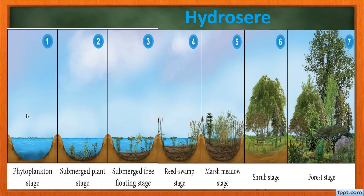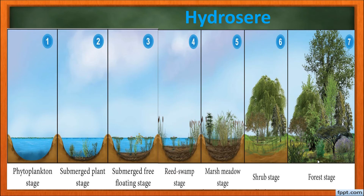To summarize the seven stages of Hydrosere: Stage 1 — Phytoplankton stage; Stage 2 — Submerged plant stage; Stage 3 — Submerged free-floating stage; Stage 4 — Reed Swamp stage, where water level begins to decrease; Stage 5 — Marsh Meadow stage, where the water becomes shallow and humus accumulates at the bottom; Stage 6 — Shrub stage, where soil becomes totally dry; Stage 7 — Forest stage, the climax community.